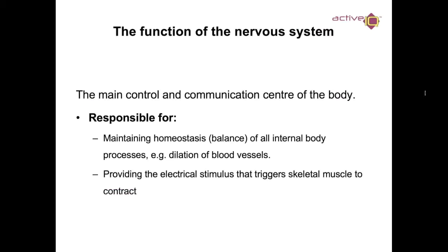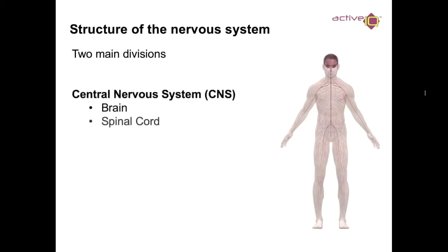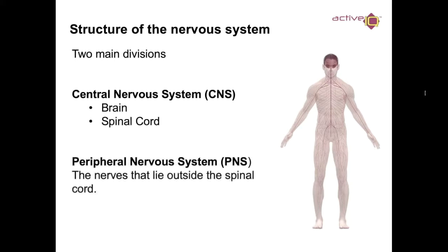So the function of the nervous system — it is the main control and communication center of the body. It's responsible for maintaining homeostasis, which is the body's balance to keep control, and it provides the electrical stimulus that triggers skeletal muscle to contract. The nervous system has two main parts: the central nervous system — the brain and spinal cord — and the peripheral nervous system, which is the nerves that lie outside the spinal cord.